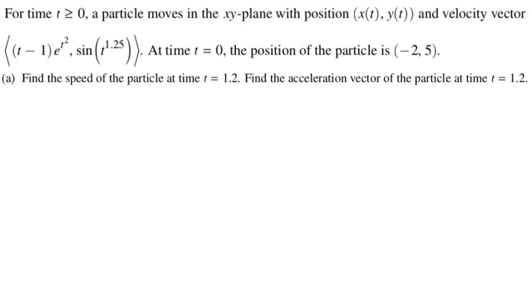It's the quantity t minus one e to the t squared, comma, sine of t to the 1.25. So the first thing I would do is I would store that on my calculator. I like to store the derivative of x, so x prime as dx of t, and I like to store y prime as dy of t. So that was the first move that I made.